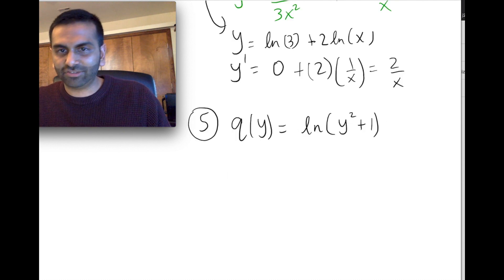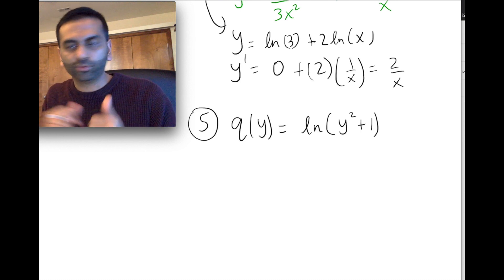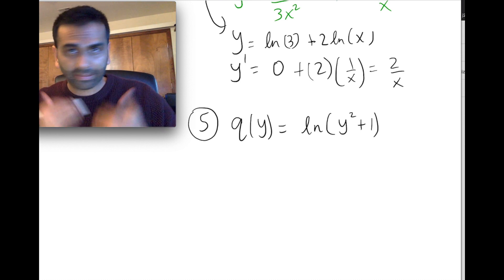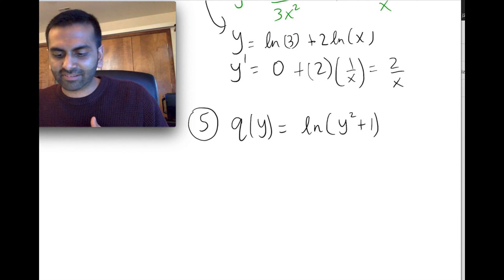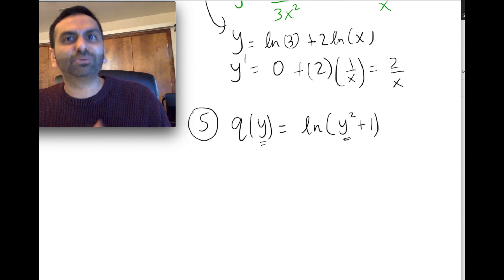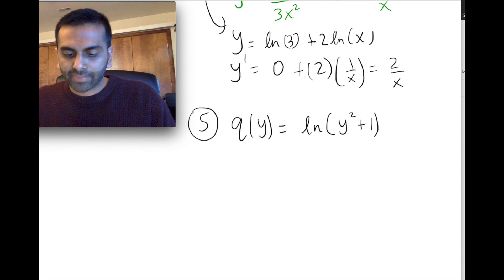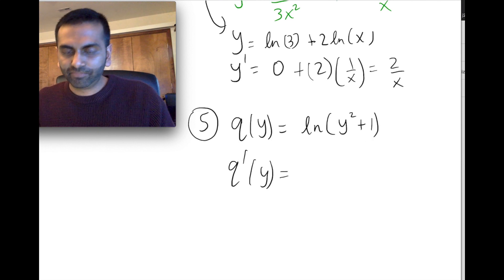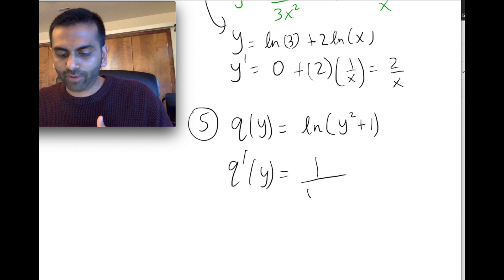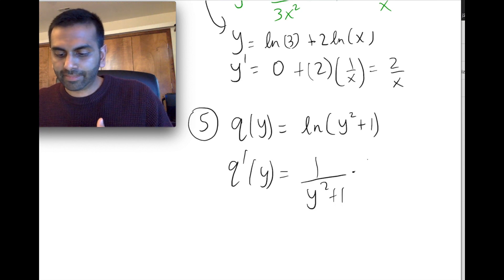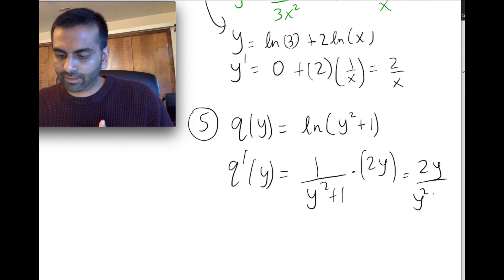For a function like q(y) = ln(y² + 1), there's an addition inside so we can't apply log rules to simplify — we're forced to use the chain rule. The derivative of ln of anything is 1 over that thing, so 1/(y² + 1), multiplied by the derivative of the inside, which is 2y. So q'(y) = 2y / (y² + 1).